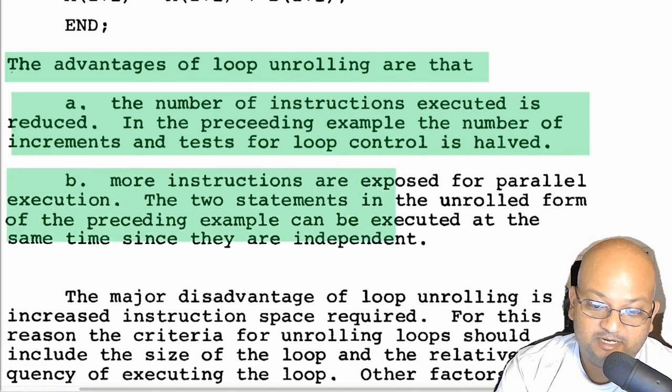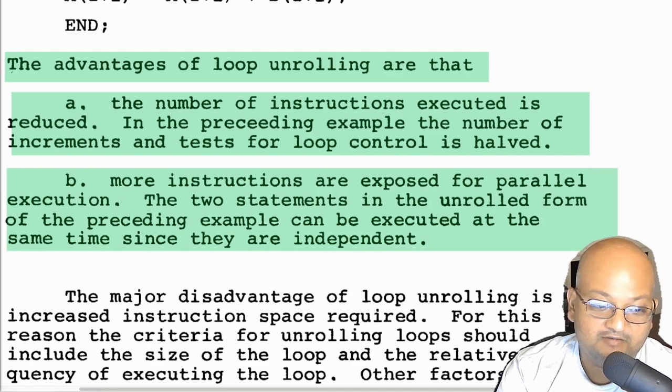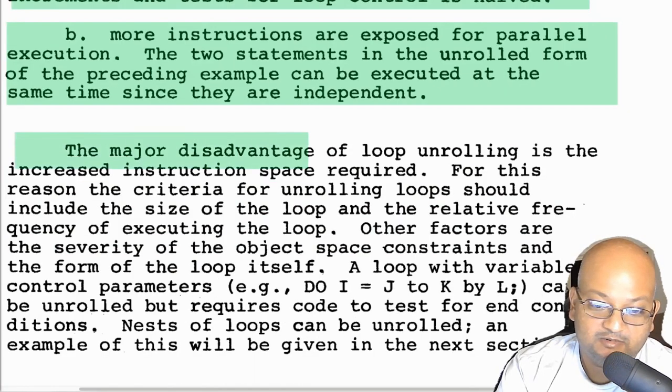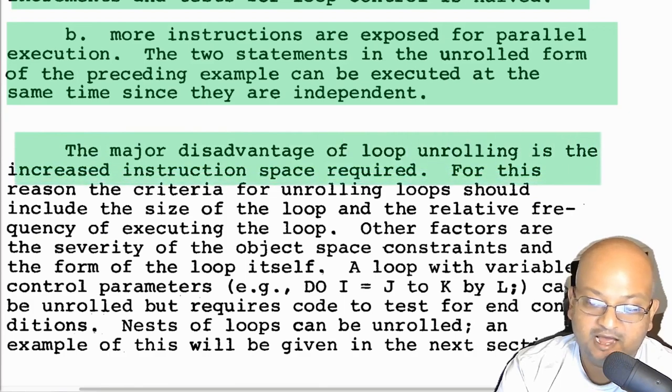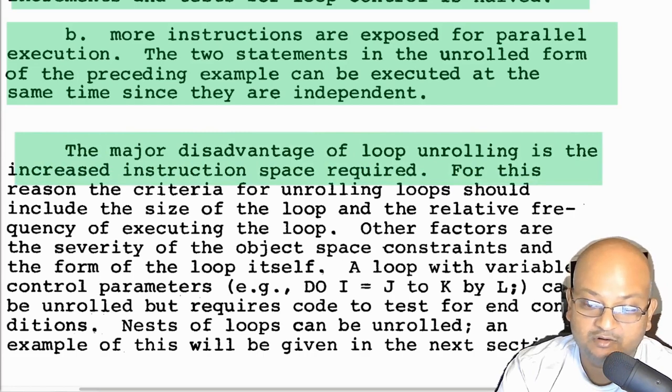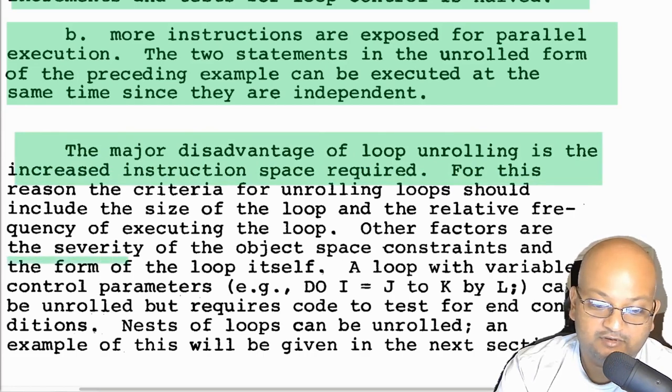The next big advantage is that once a loop is unrolled, you have a longer stretch of code that you can then perform other optimizations on. For example, you could find pieces of the code inside that loop that when unrolled can be executed in parallel. Like many such optimizations, the major downside of doing this is that you increase your compiled code size.